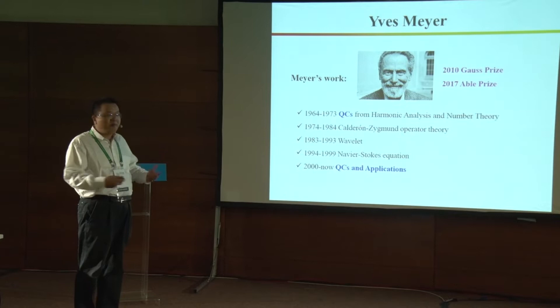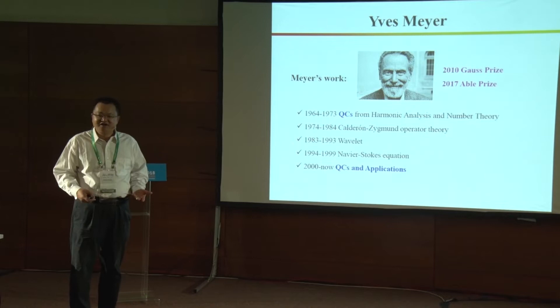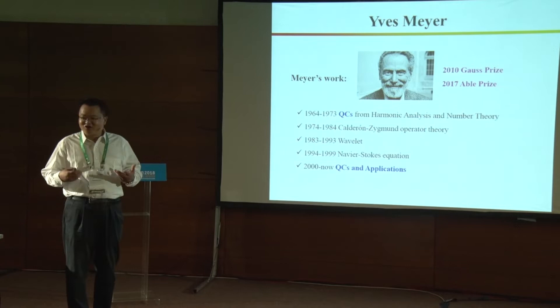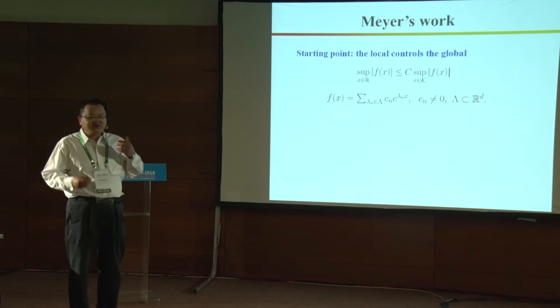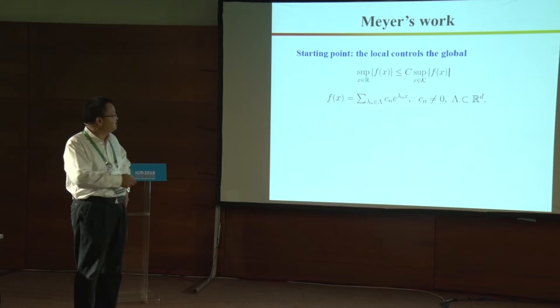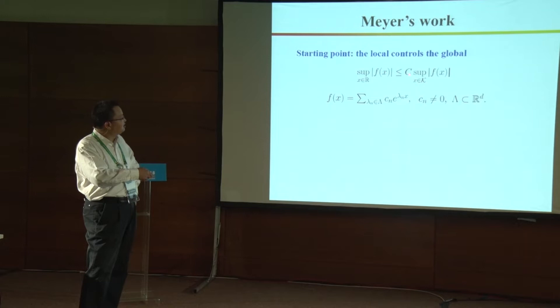Meyer worked on the Calderón-Zygmund operator theory and wavelets — he received his prize mostly based on wavelets — but he was also working on the Navier-Stokes equation. From 2000, he was also working on quasicrystals and applications. Meyer's starting point is that 'local controls the global' for a function: a function from R^n to R is determined by local information. This is the periodic function case — a classic example of local controlling global.